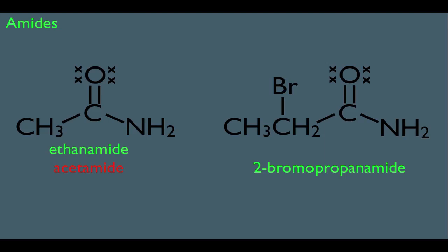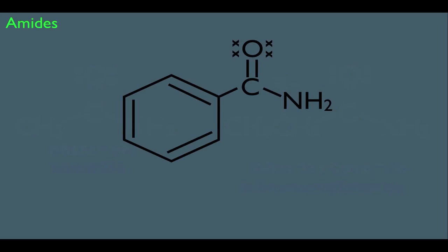And again, using the common name here, the common name for this molecule would be alpha-bromopropanamide. What would we do if our amide is connected to a benzene ring? Well, the IUPAC name would simply be benzene carboxamide. The common name would be benzamide.